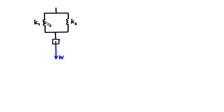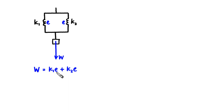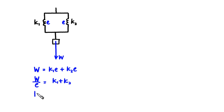In general, you can connect two springs with different spring constants K1 and K2. If they are connected in parallel, they must have the same extension E. So the weight is supported by two tension forces: W equals K1E, which is the tension force in spring 1, plus K2E, which is the tension force in spring 2. After rearranging the equation, W over E is the spring constant of the composite spring. So the spring constant of two springs connected in parallel is K1 plus K2.